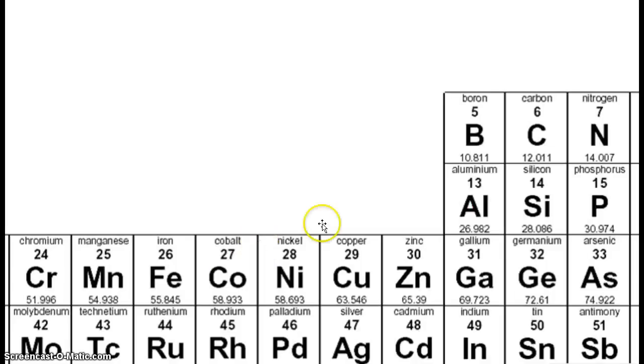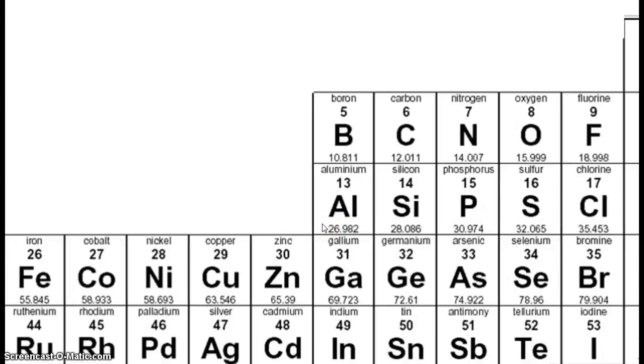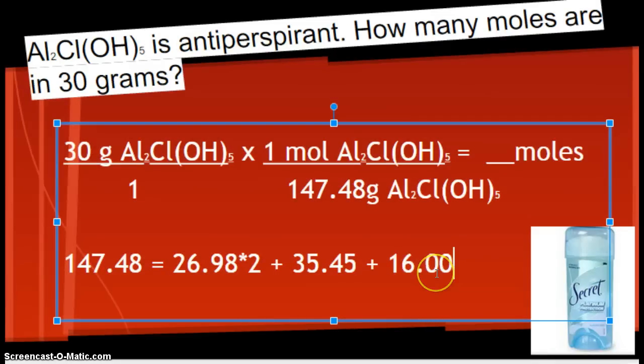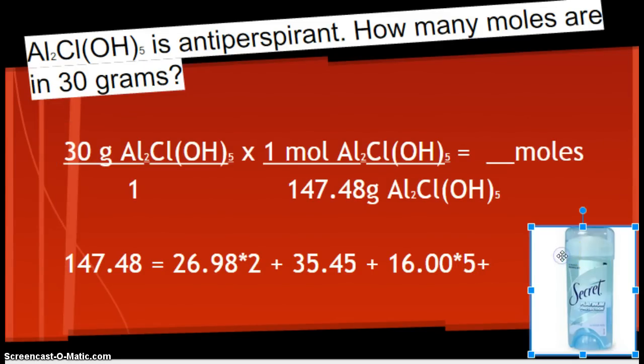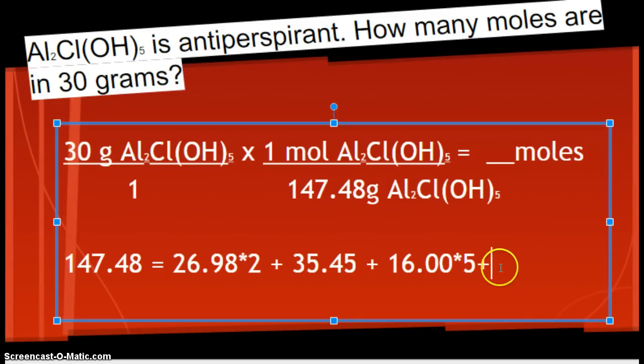Now, I look up oxygen. Oxygen is what? 16. And, how many oxygens do we have? We've got to distribute the 5. So, we have 5 oxygens. Plus. What do we have left? Plus, we have hydrogens. Each hydrogen is 1.01 times how many are there? There's 5. Okay. So, that's what you have to do to get your 147.48, which is the molar mass of Al₂Cl(OH) parentheses 5.